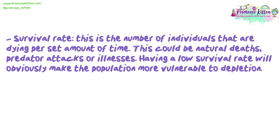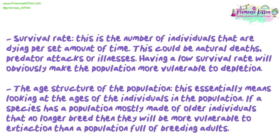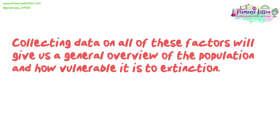Survival rate is the number of individuals that are dying per set amount of time. This could be natural deaths, predator attacks, or illnesses. Having a low survival rate will obviously make the population more vulnerable to depletion. The age structure of the population means looking at the ages of the individuals. If a species has a population mostly made of older individuals that no longer breed, then they will be more vulnerable to extinction than a population full of breeding adults. Collecting data on all of these factors will give us a general overview of the population and how vulnerable it is to extinction.